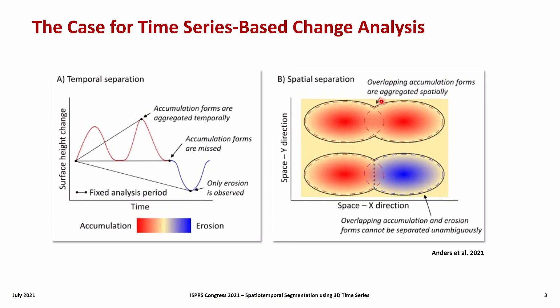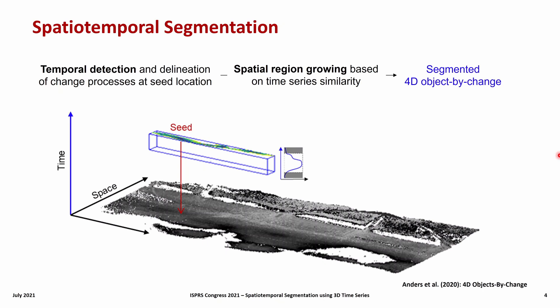This is why we developed a method that makes use of the surface change history to detect and spatially delineate changes from 3D time series. Our method of spatial-temporal segmentation first detects changes in the temporal domain of surface changes at a location in the scene. This location and detected period is used as a seed for spatial region growing regarding neighboring locations with a similar surface change history in the detected period. The resulting segment provides what we call a 4D object by change, identified based on its surface change history.